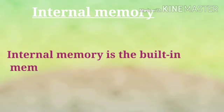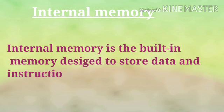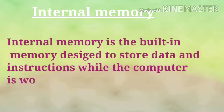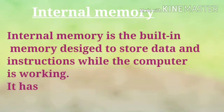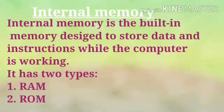Now let's see what is internal memory or primary memory. Internal memory is the built-in memory designed to store data and instructions while the computer is working. It has two types: RAM and ROM. When we work on the computer, we work on the primary memory, and primary memory comes built-in with the computer.